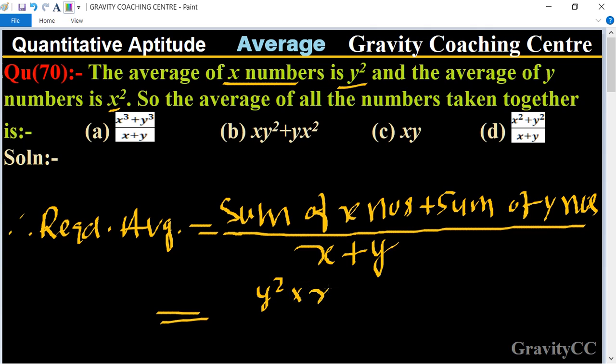Plus the average of y numbers is given as x², so it will become x² into y upon x plus y.